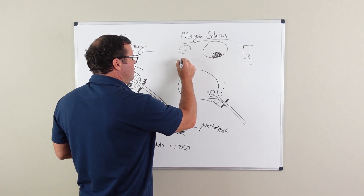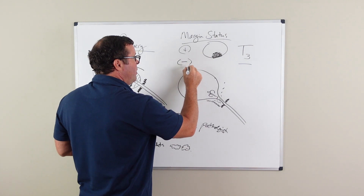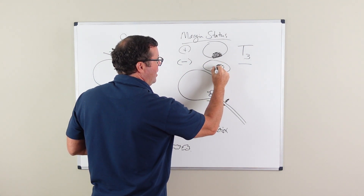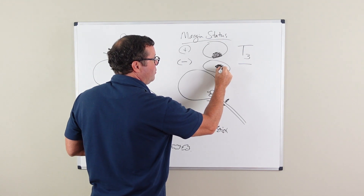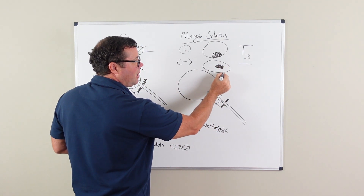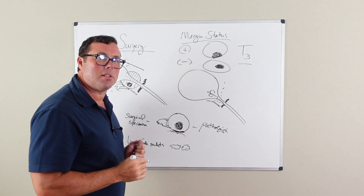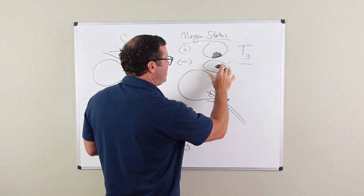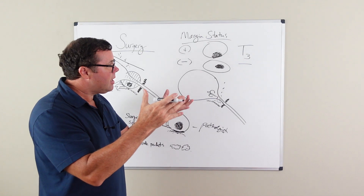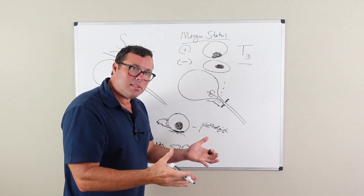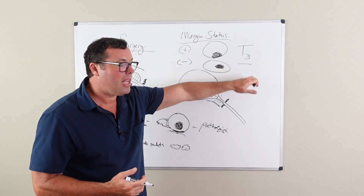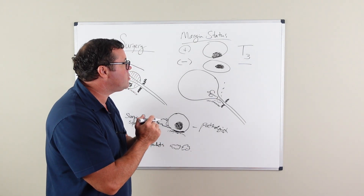If your margin is negative, your prostate was removed and the cancer was removed, and the cancer did not come close to the edge of the prostate. These are the patients that you like to see — those who have chosen surgery and have a potential cure rate from their surgery.